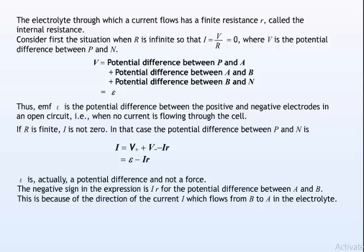If r is finite, I is not zero. In that case, the potential difference between P and N is V equals V plus plus V minus minus Ir equals epsilon minus Ir.